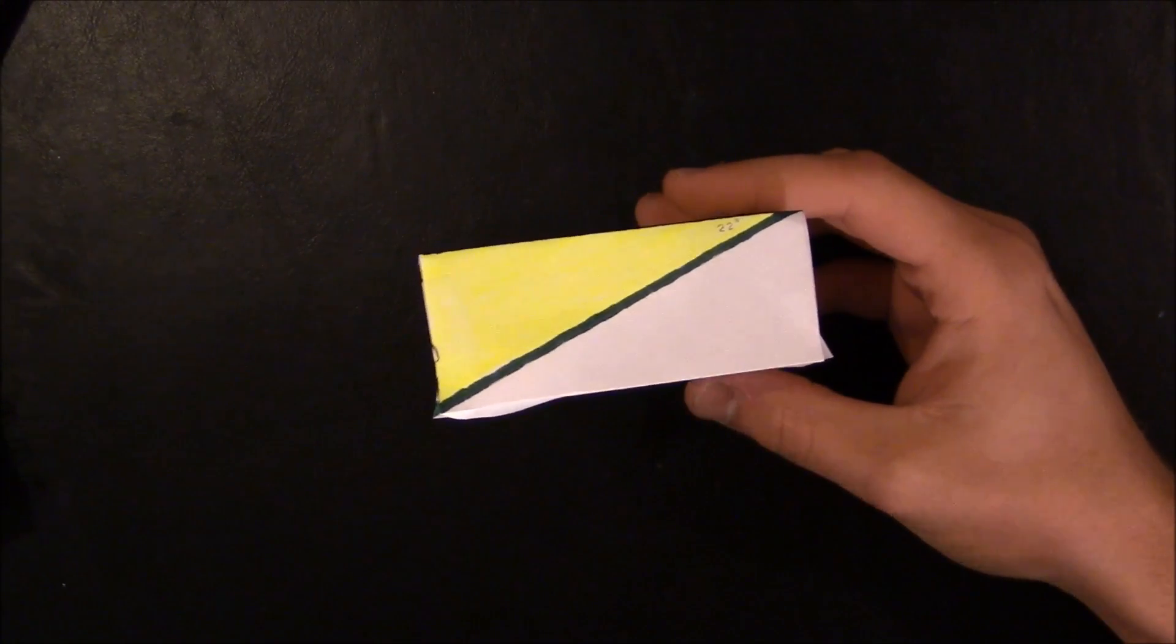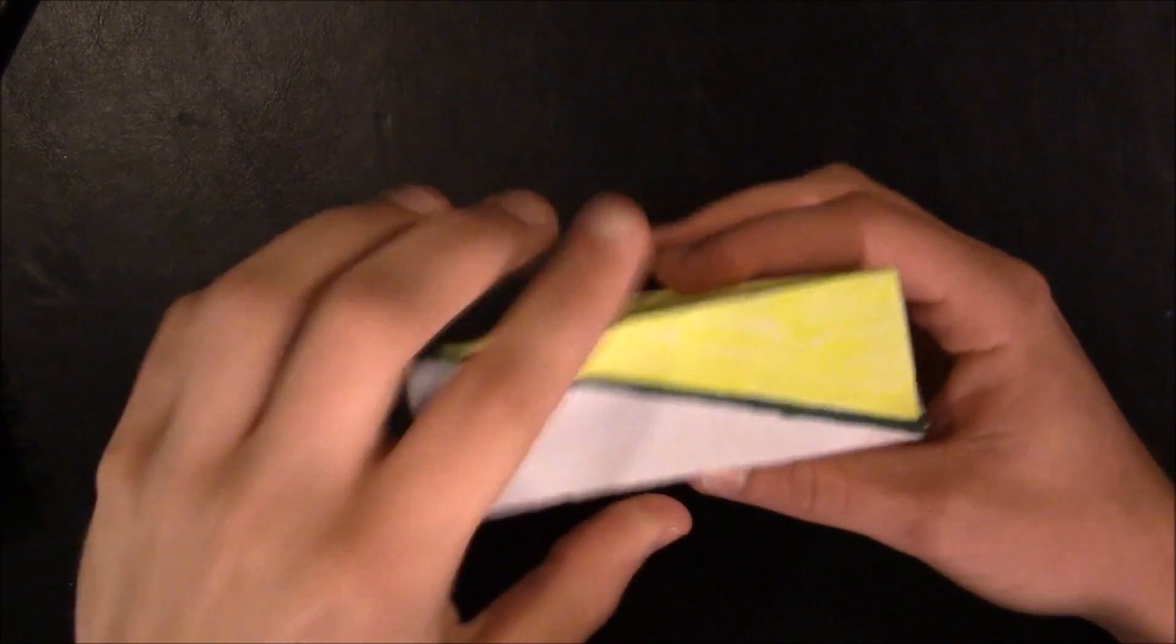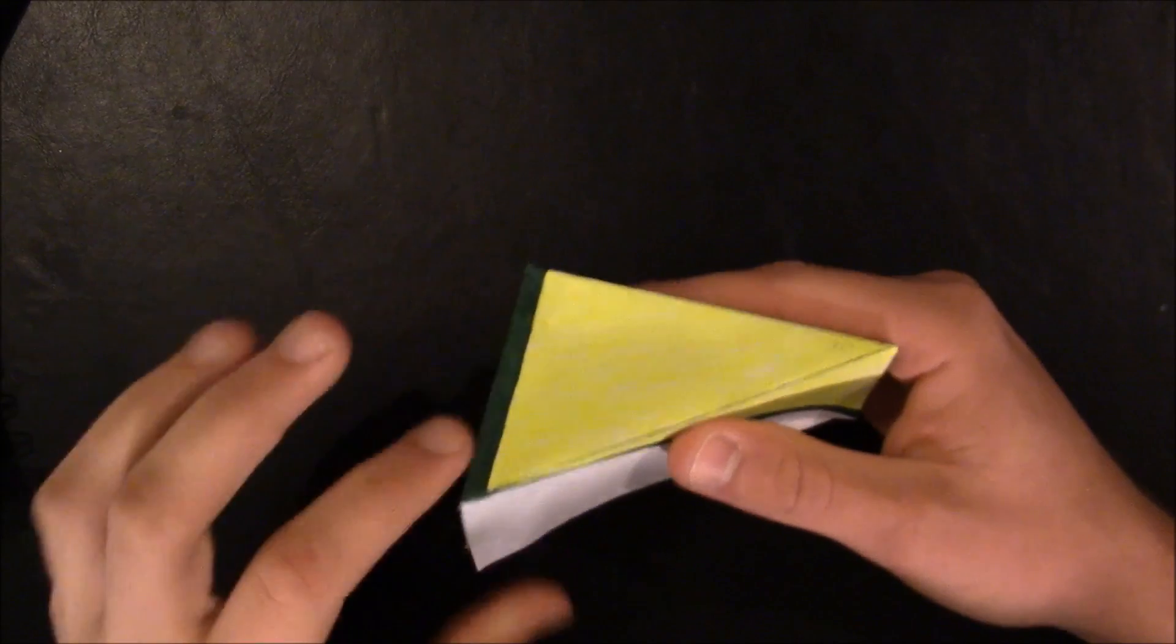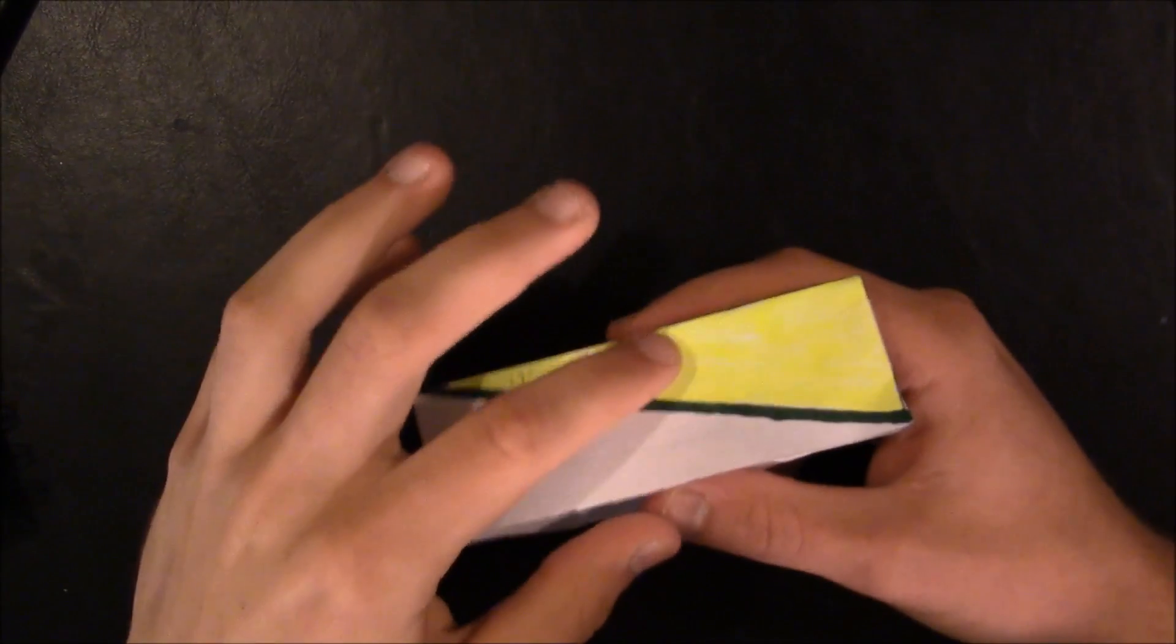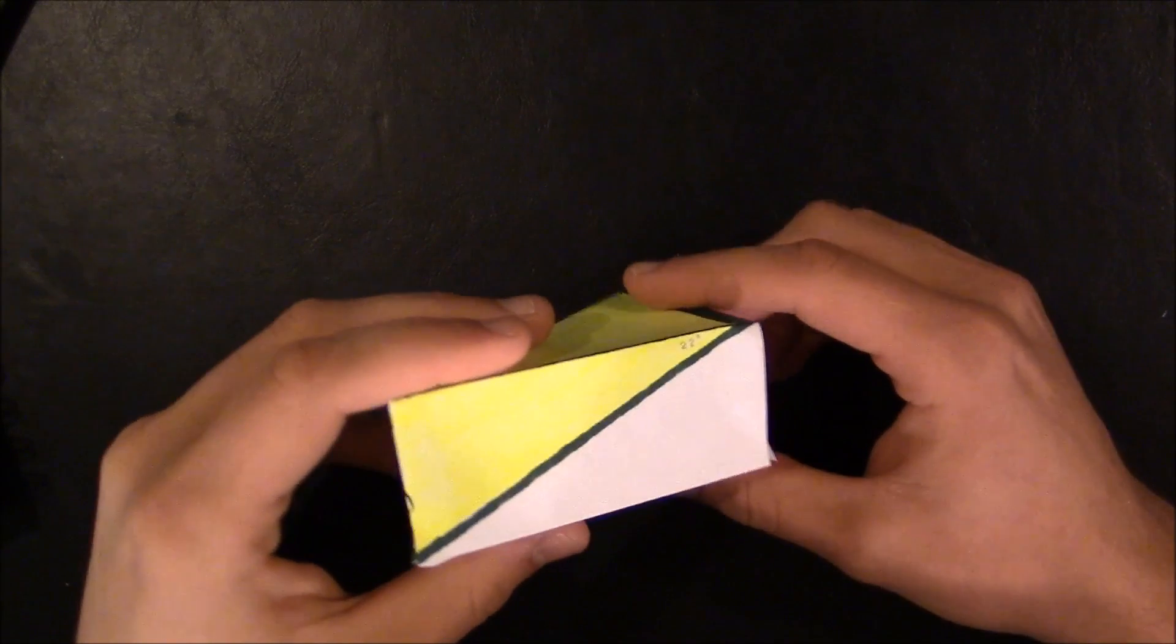So the question then becomes, how do we find the true dip if we know the apparent dip and some other data? Most of the time, we're going to know the strike value and we're going to know the apparent dip. So how do we find the true dip based off of that? Well, there's four different methods.